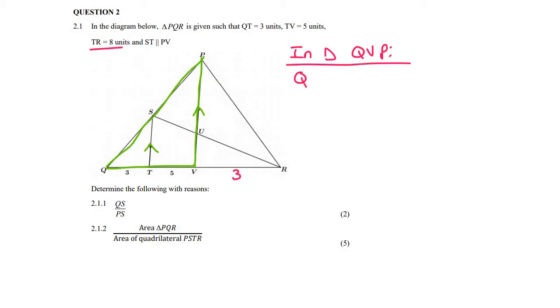We can say that QT, well, let's start with what we want. It's QS over PS is equal to QT over TV, and that's just going to be Prop Theorem, because lines TS is parallel to VP. Now, that's not the only reason that you can give. There are others. The other one is line parallel, and then side of triangle.